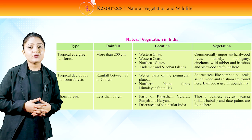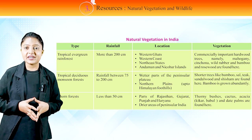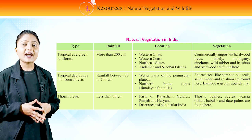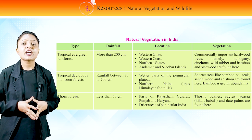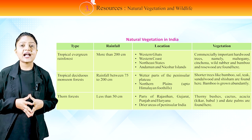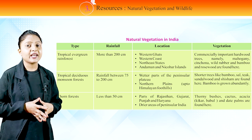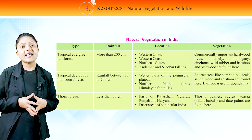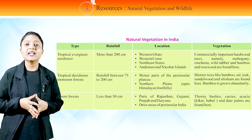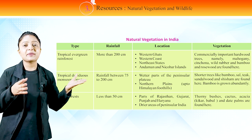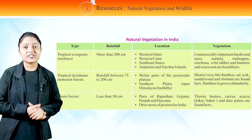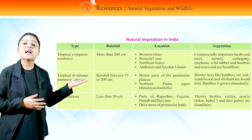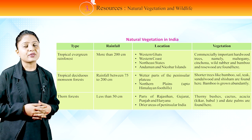Tropical deciduous monsoon forest: Rainfall between 75 to 200 cm. Location: Wetter parts of the peninsular plateau, northern plains up to Himalayan foothills. Shorter trees like bamboo, sal, teak, sandalwood and shisham are found here. Bamboo is grown abundantly. Thorn forest: Less than 50 cm of rainfall. Location: Parts of Rajasthan, Gujarat, Punjab and Haryana, and drier areas of peninsular India. Vegetation: Thorny bushes, cactus, acacia, keekar, babool and date palms are found here.